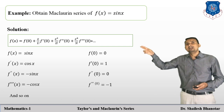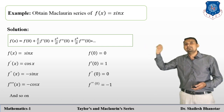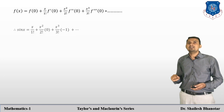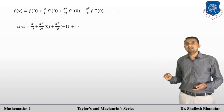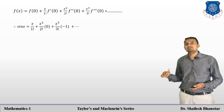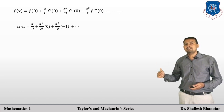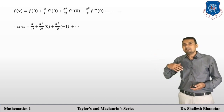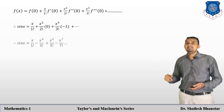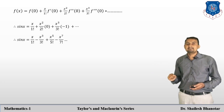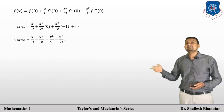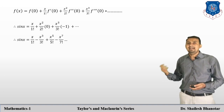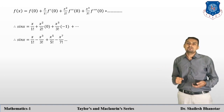Now we substitute all these values into the Maclaurin series form. Substituting gives: sin x = x/1! + x²/2! · 0 + x³/3! · (−1) + ... When simplified, the expansion of sin x is: sin x = x/1! − x³/3! + x⁵/5! − x⁷/7! + and so on.